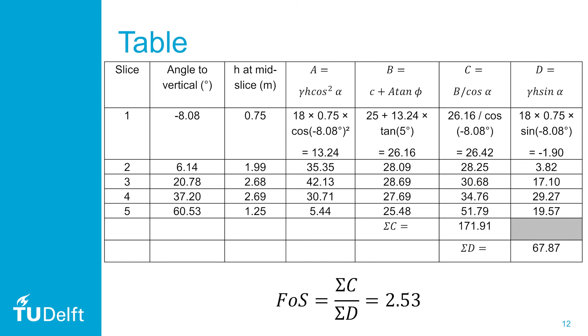The numerical substitutions are given for slice 1, and feel free to pause the video to check yourself. The factor of safety can then be calculated by dividing the sum of c by the sum of d, and this is equal to 2.53 for this problem.